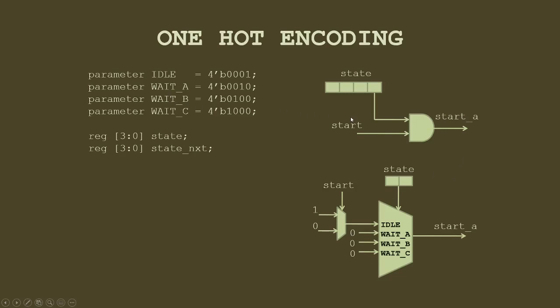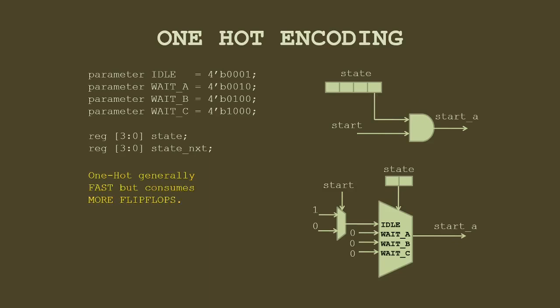You don't always need to write one-hot encoding manually. Synthesis tools like Vivado or Xilinx ISE have a setting to implement state machines as one-hot, and they will do the conversion automatically. However, one-hot is not free — while it uses less combinational logic, it uses more flip-flops. So it's a trade-off: if you are short on slice registers, avoid one-hot; if you have timing issues, use it.